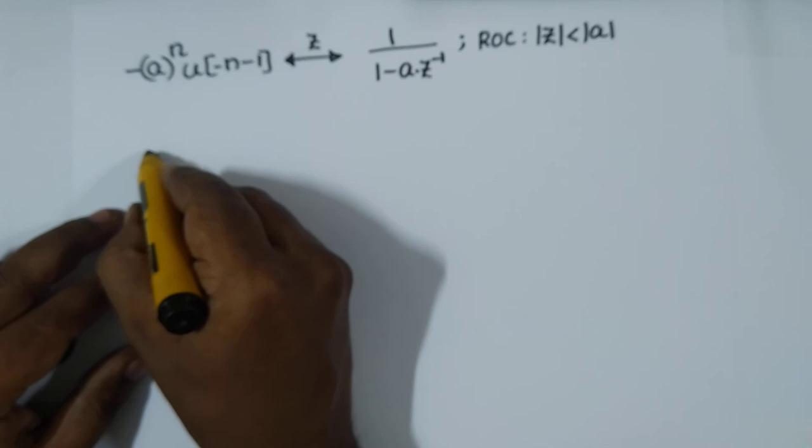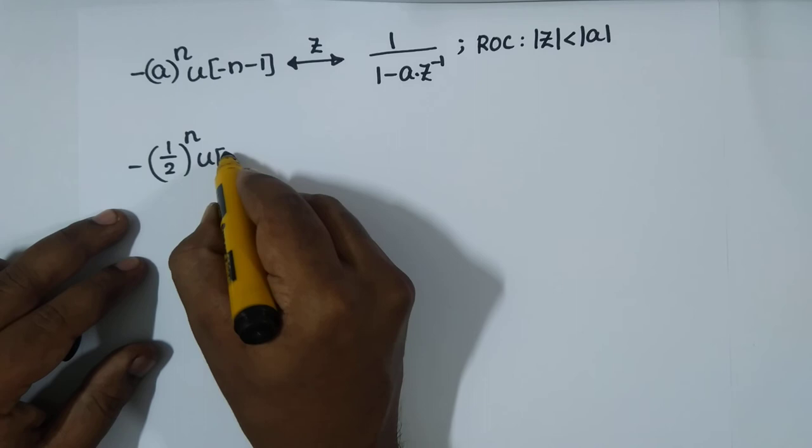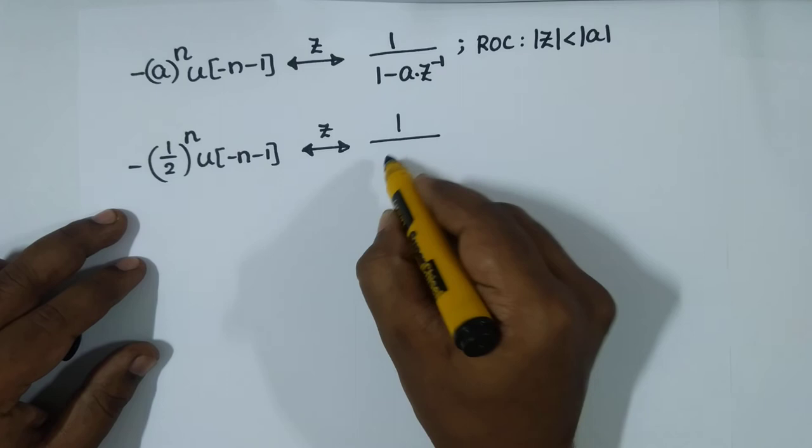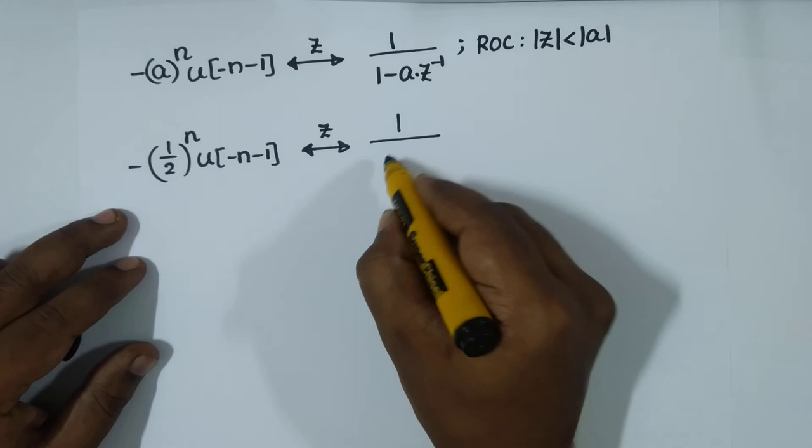In our question, the anti-causal term has a = 1/2, so in place of a we have 1/2. Therefore the Z-transform of that term gives 1 / (1 - (1/2)·z^(-1)), and the ROC is |z| < 1/2.